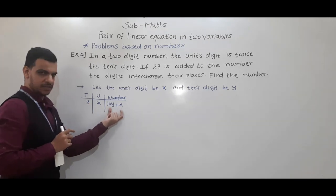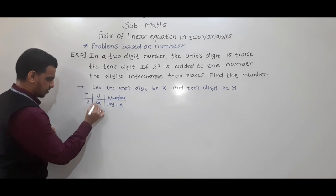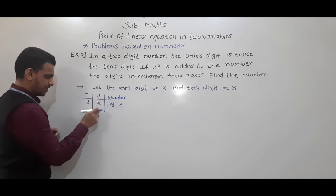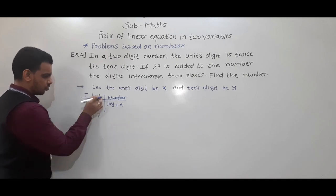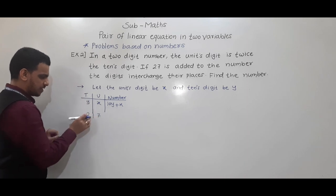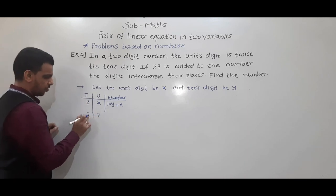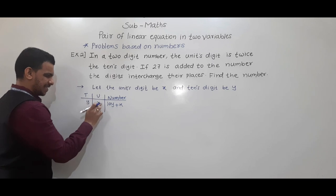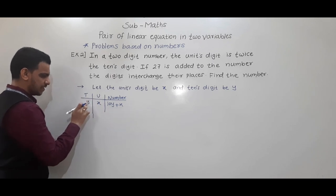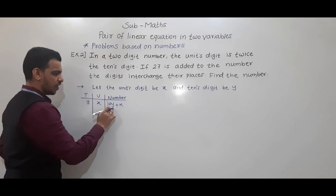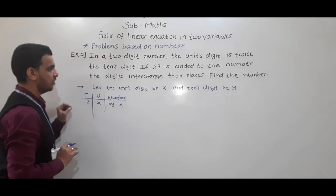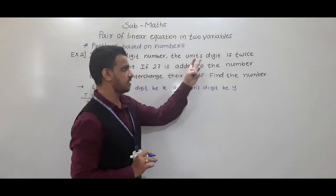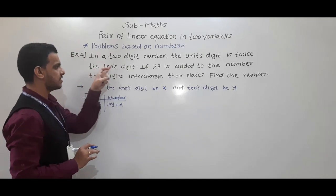Many students don't understand how 10y plus x came. For example, if the number is 27: units digit is 7, tens digit is 2, and we can write it as 2 into 10 plus 7. So similarly, if units digit is x and tens digit is y, the number is 10 into y plus x. Now, in a two-digit number the units digit is twice the tens digit.